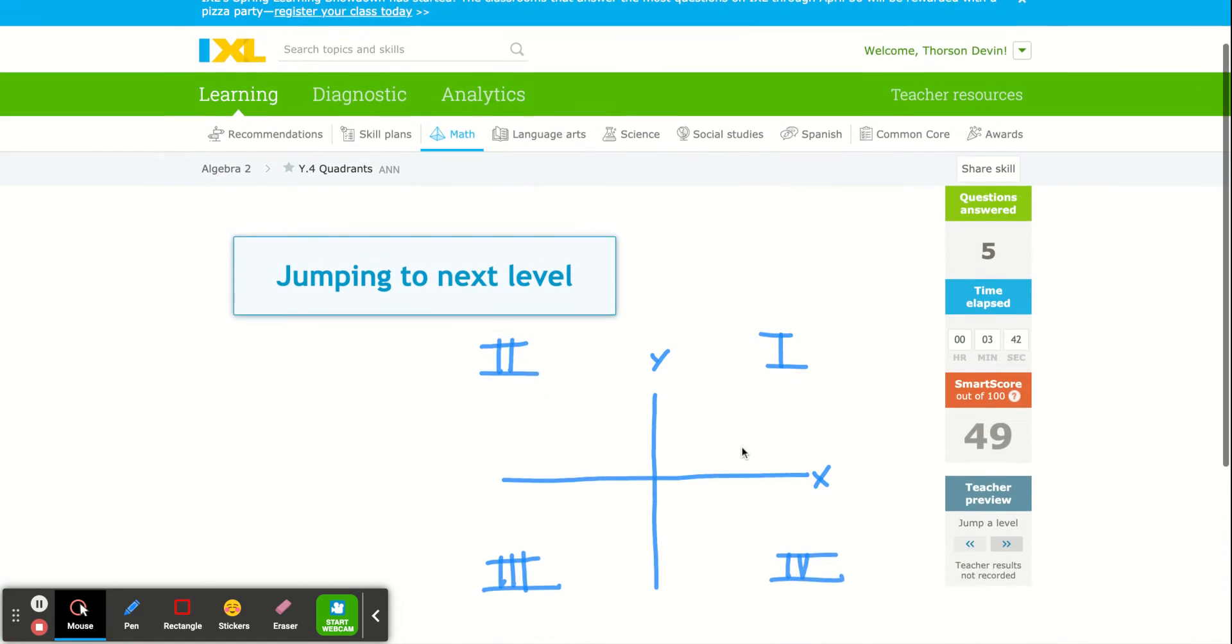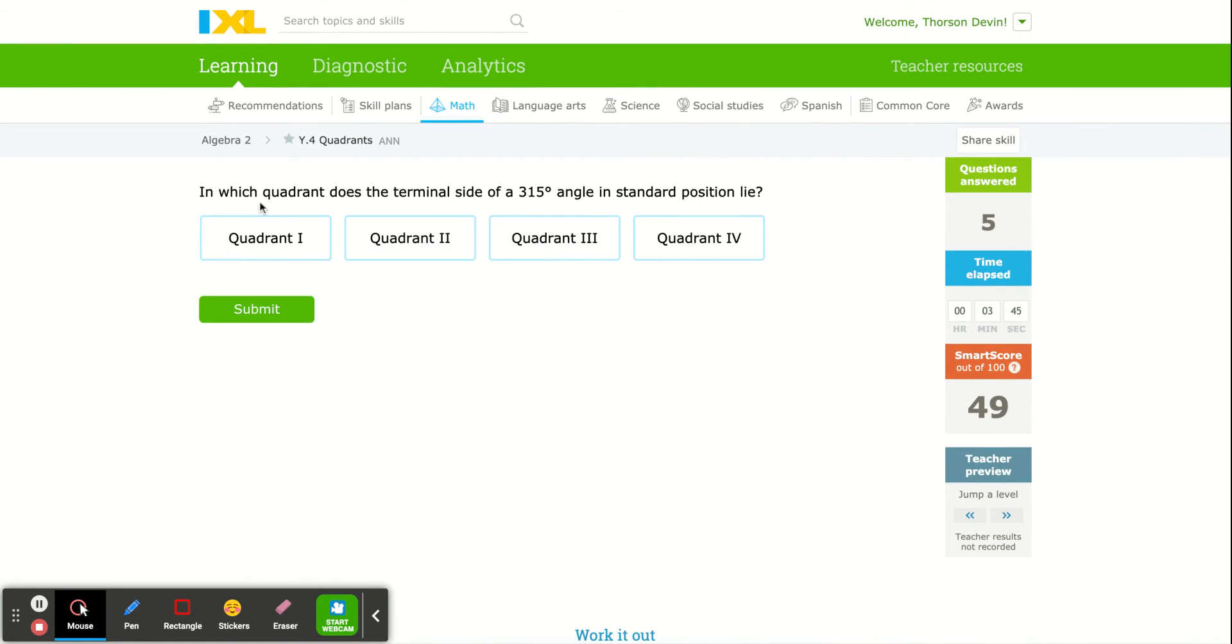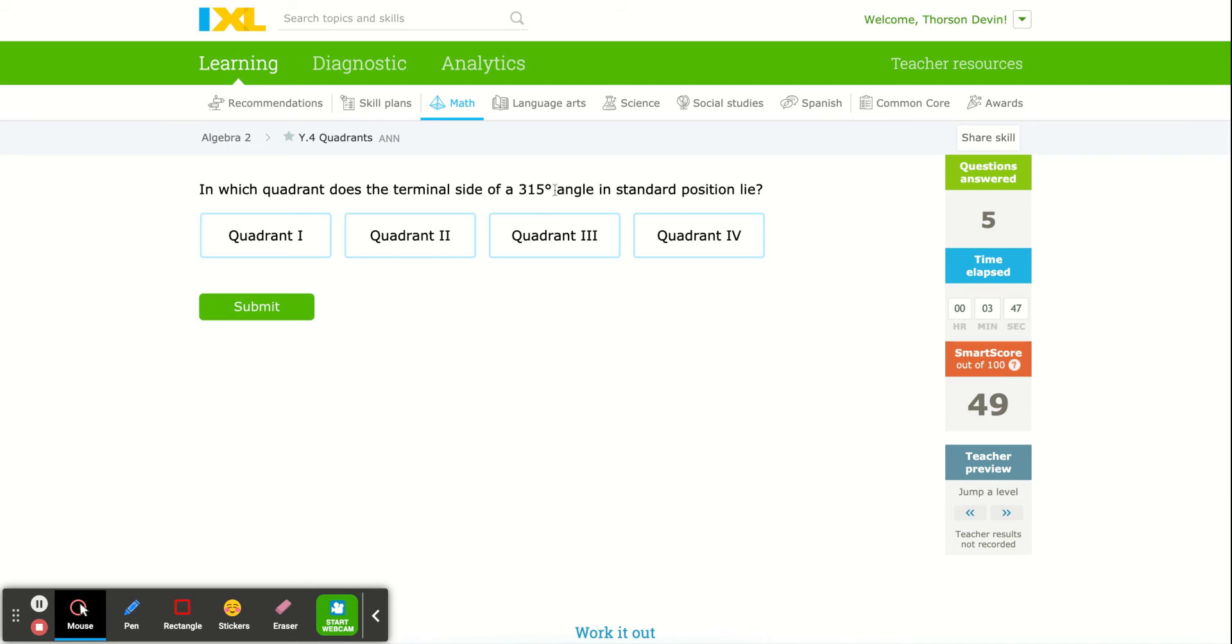I'm going to jump ahead. Here we go. In which quadrant does the terminal side of a 315 degree angle end up?